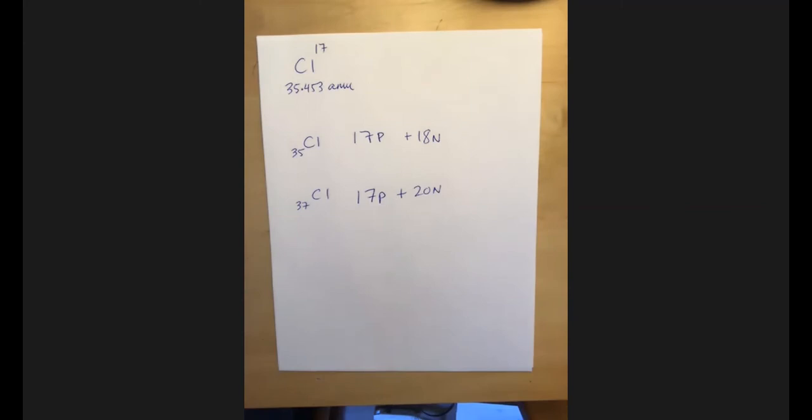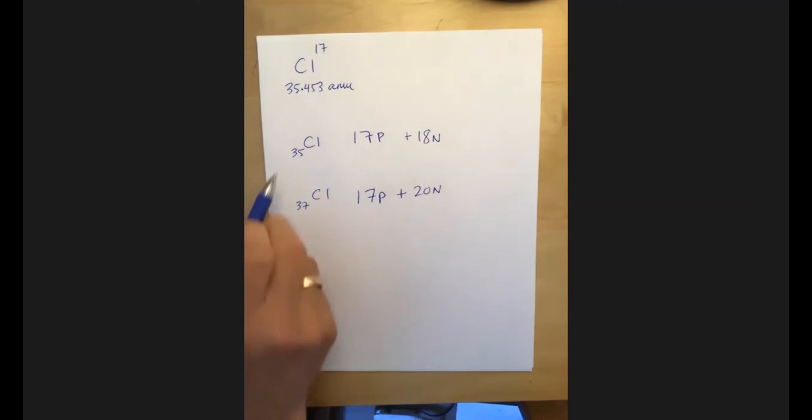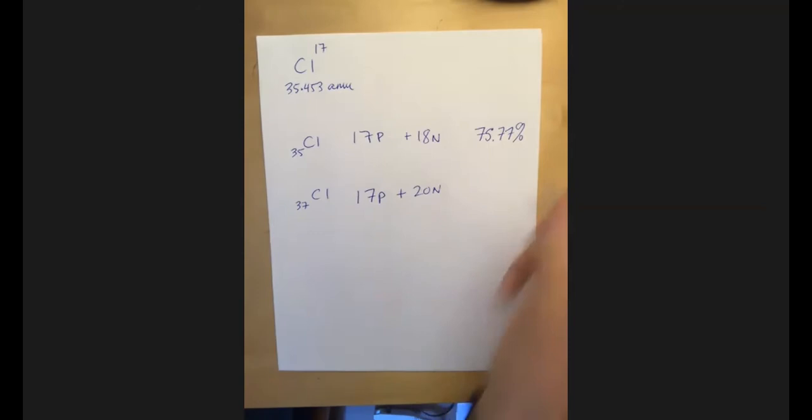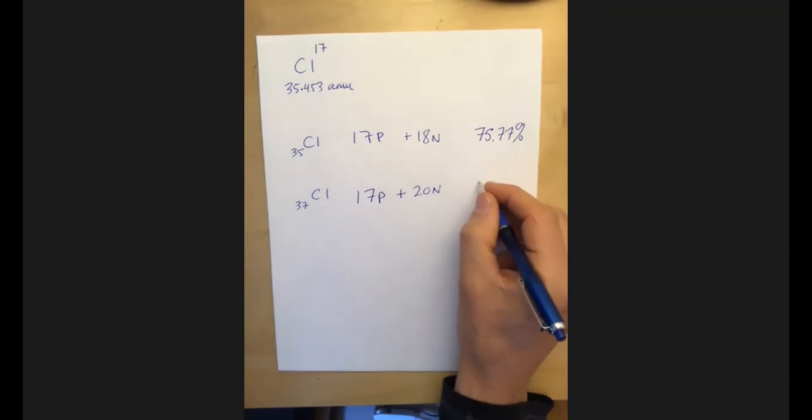And one of the things that we have discovered in nature is that for chlorine 35, this is 75.77% of all chlorine. And chlorine 37 is 24.23% of all chlorine.